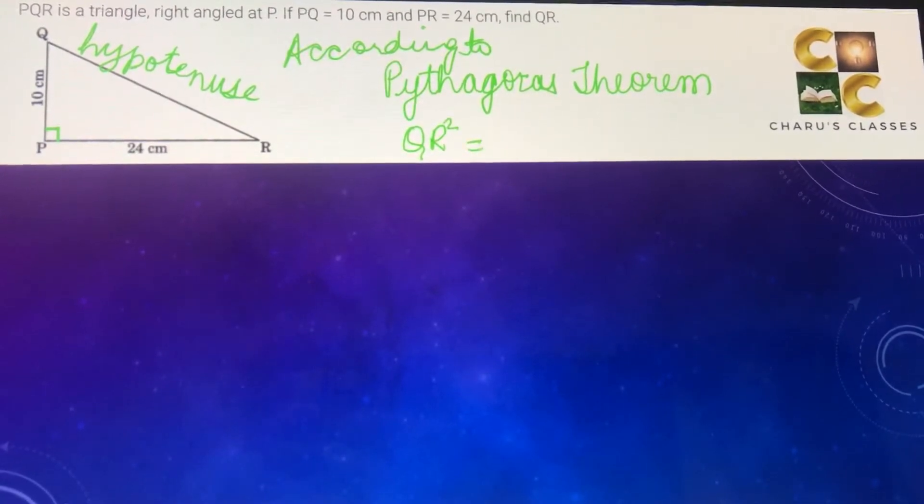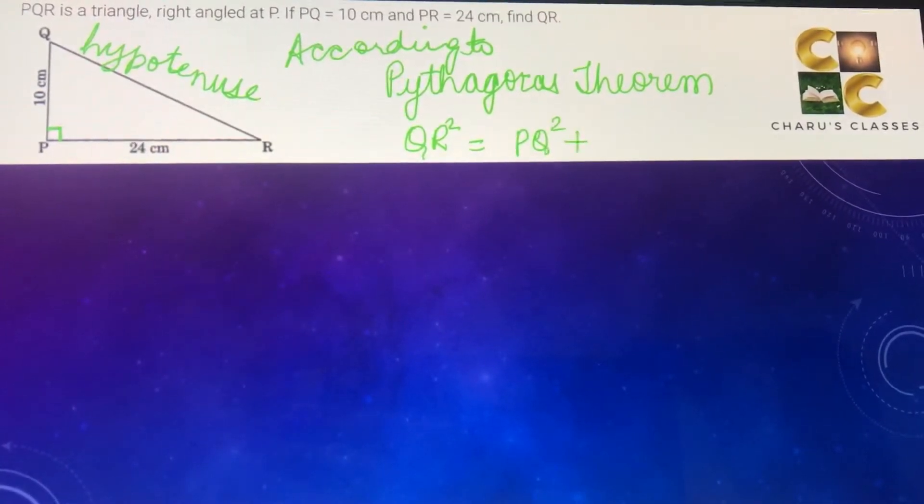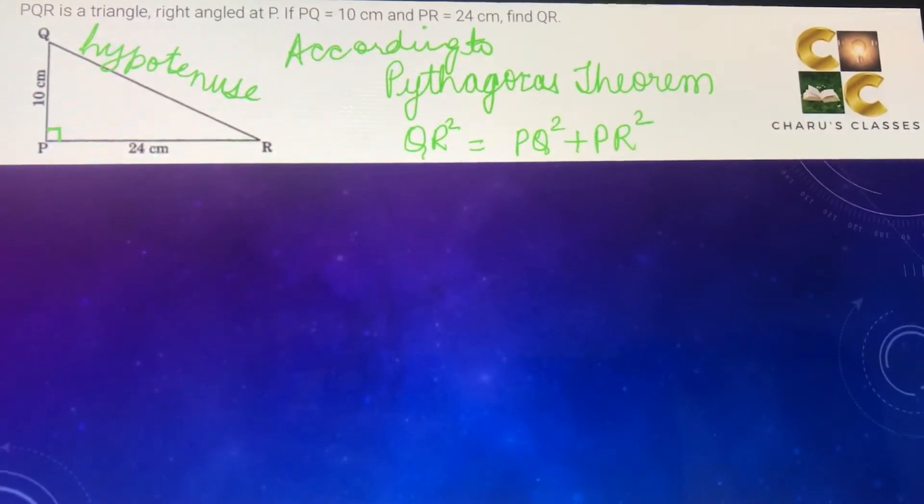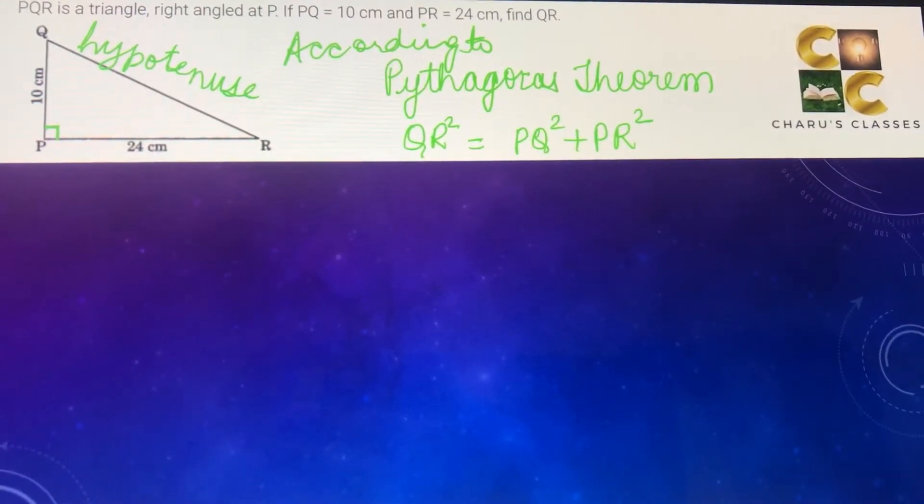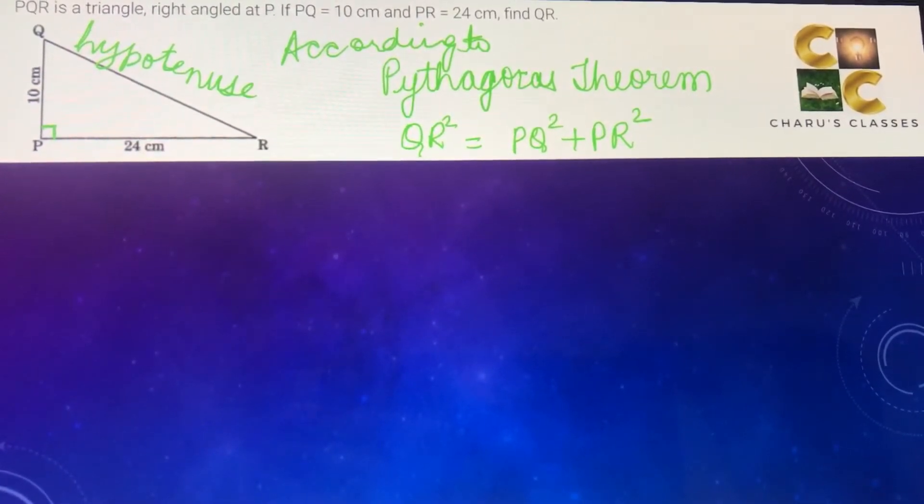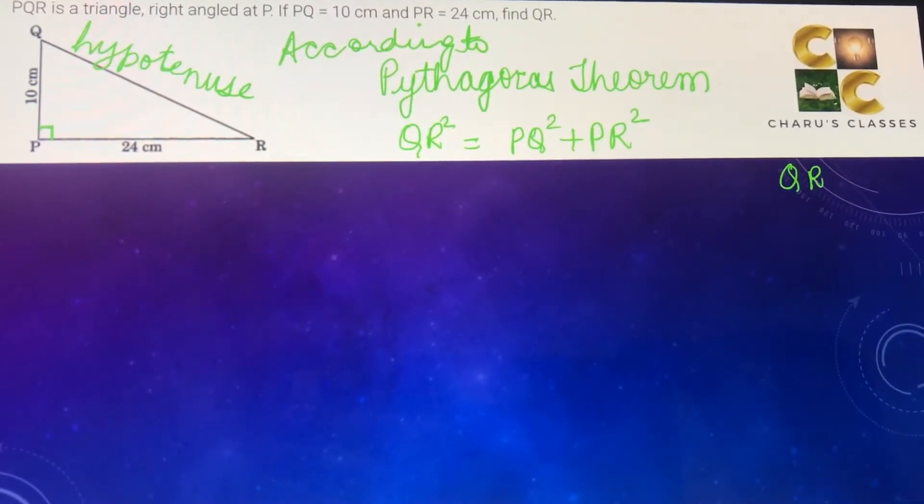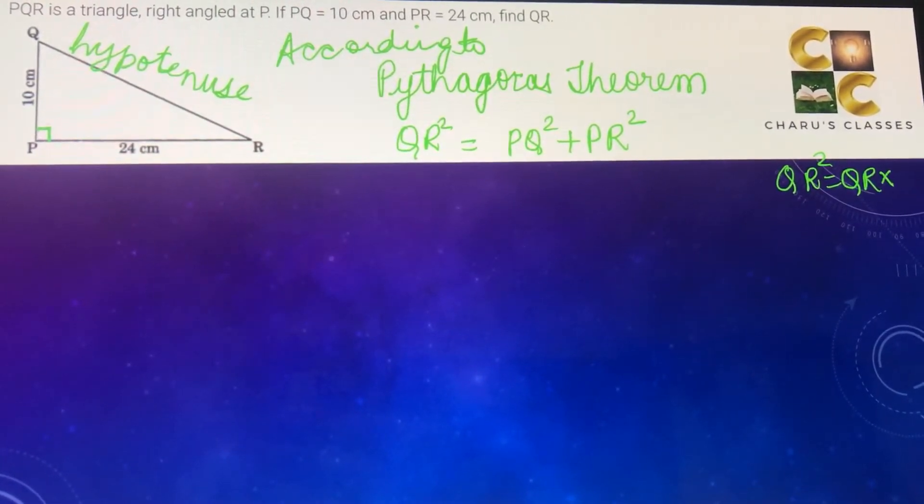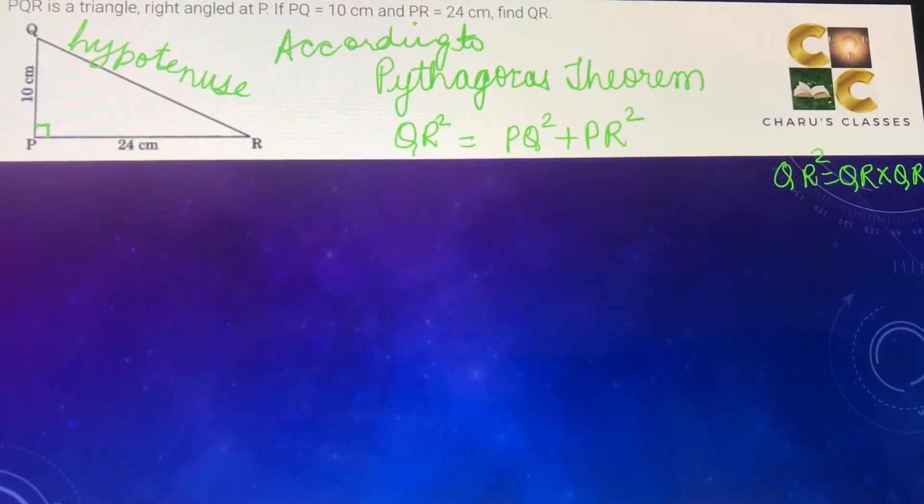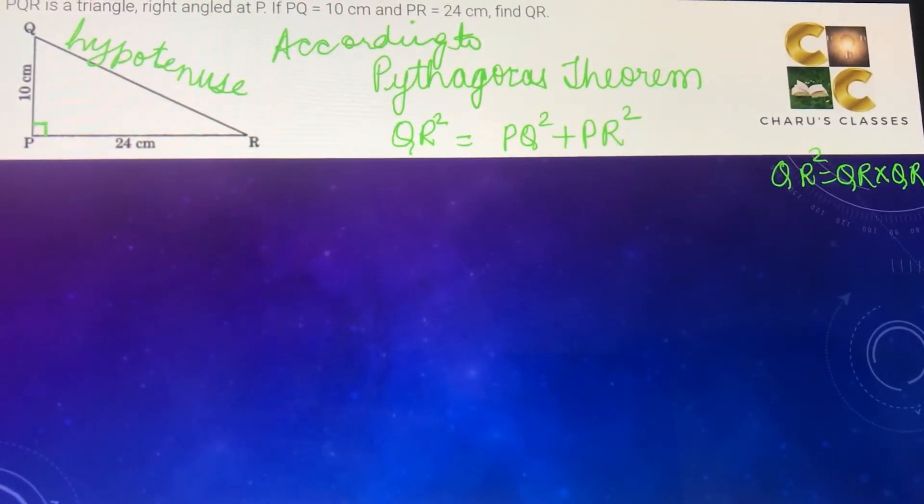QR square, that is the longest side's square, is equal to PQ square plus PR square. What does square mean? Square means QR is multiplied two times, it's not multiplying by two. QR square means QR into QR, multiply it two times, not multiply by two.